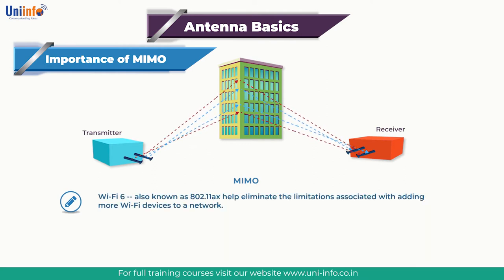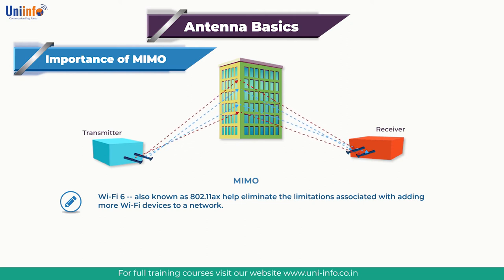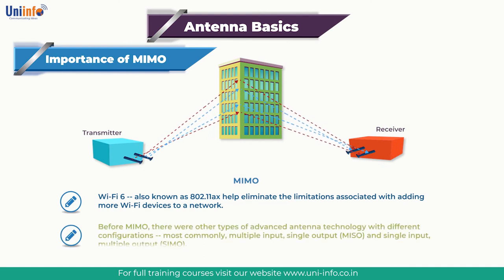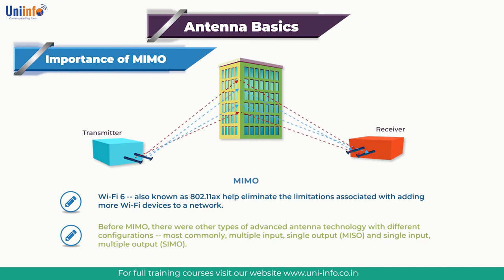Wi-Fi 6, also known as 802.11ax, raised the bar for wireless connectivity by introducing several new technologies to help eliminate limitations associated with adding more Wi-Fi devices to a network. Wi-Fi 7 was in development with an expected release in 2024. Before MIMO, there were other types of advanced antenna technology, most commonly multi-input single-output (MISO) and single-input multiple-output (SIMO). MIMO builds on these technologies.